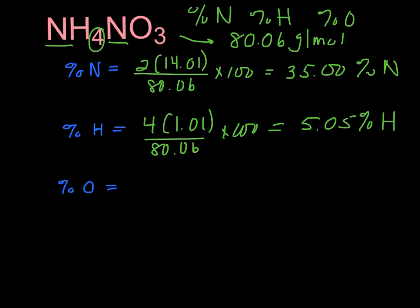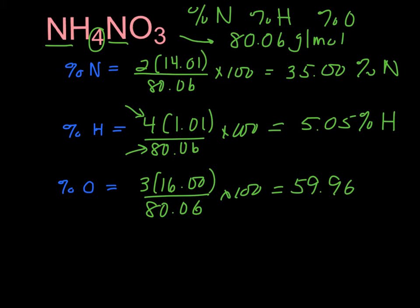So again, we're just doing the part that is the hydrogen over the whole compound. For oxygen, there's three of them, and they each weigh 16, divided by the whole, which is the molar mass of the whole compound, times 100, and you get 59.96% O. And if you check that out, you'll see that comes out to be 100%.